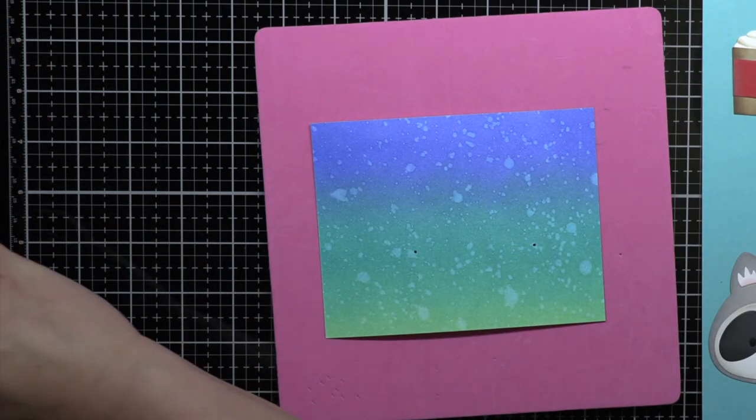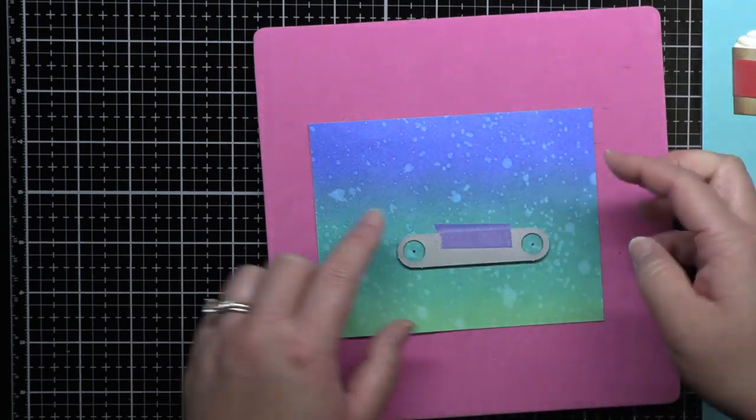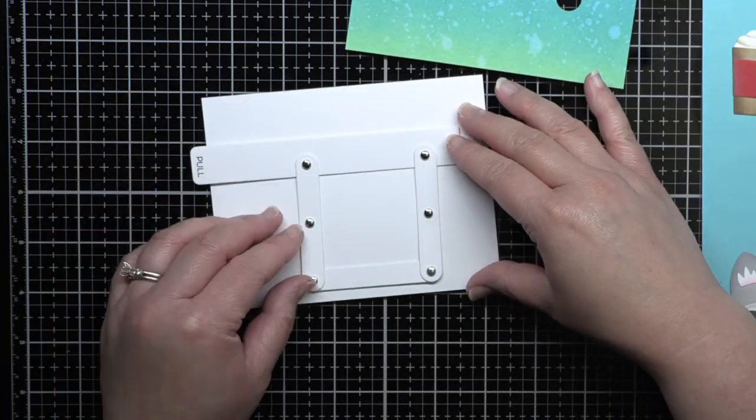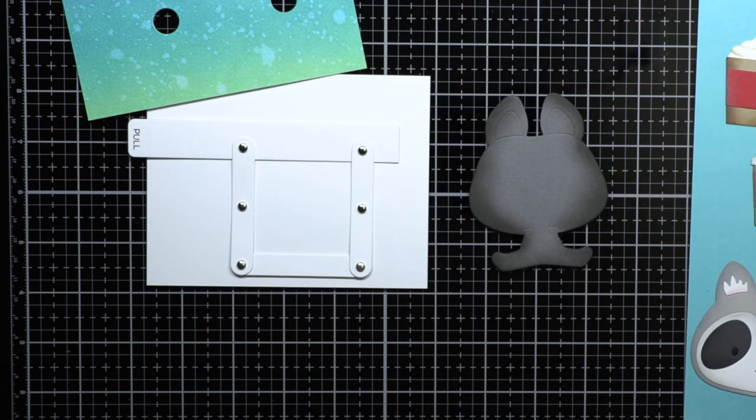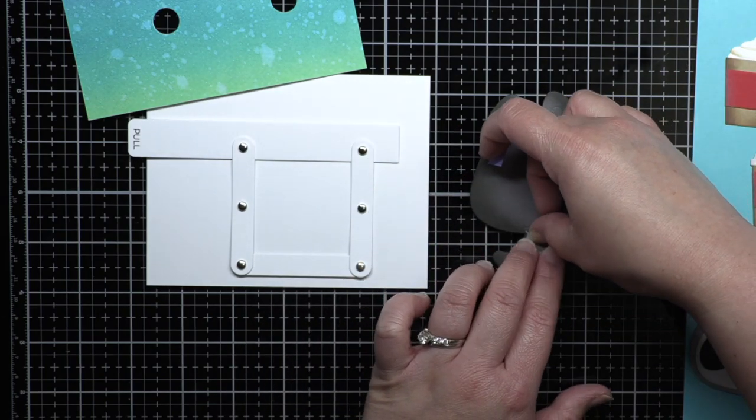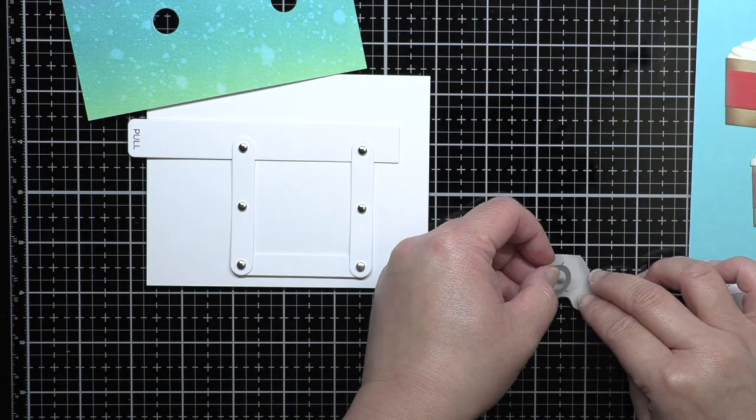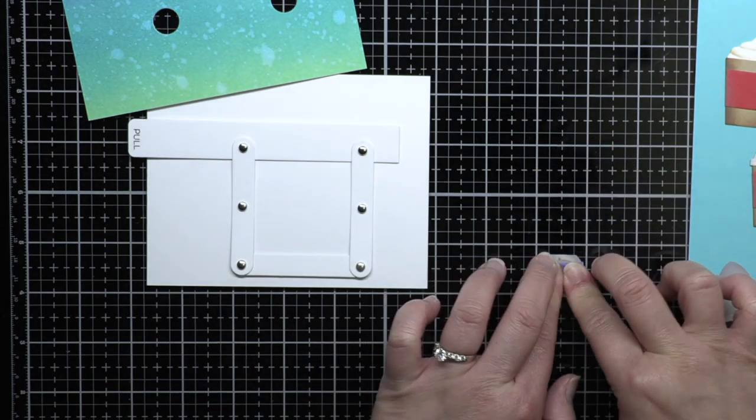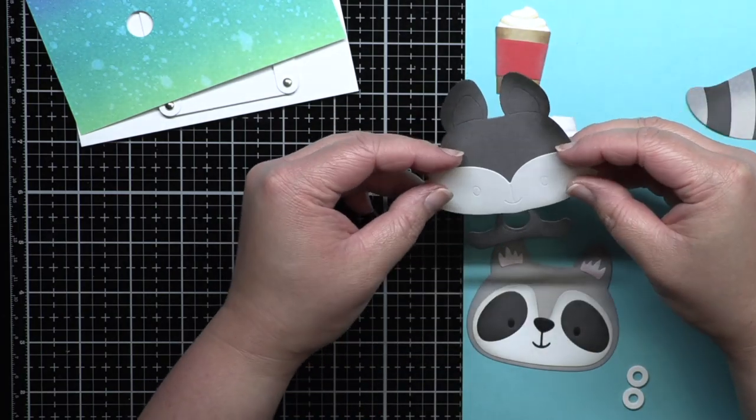I took the long circle die from the twist and turn dynamic set, and centered each circle over the holes before die cutting them. I also used the individual circle dies from the set to die cut the raccoon and fox's bodies. Then I assembled the fox's body and trimmed any overlap from the die cut circle.